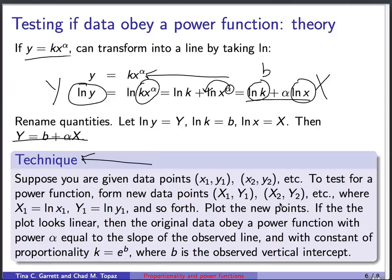Then you plot these new data points. If the plot looks linear, then the original data obey a power function, and the power alpha is equal to the slope of the observed line, and the constant of proportionality is e to the b, where b is the observed vertical intercept.